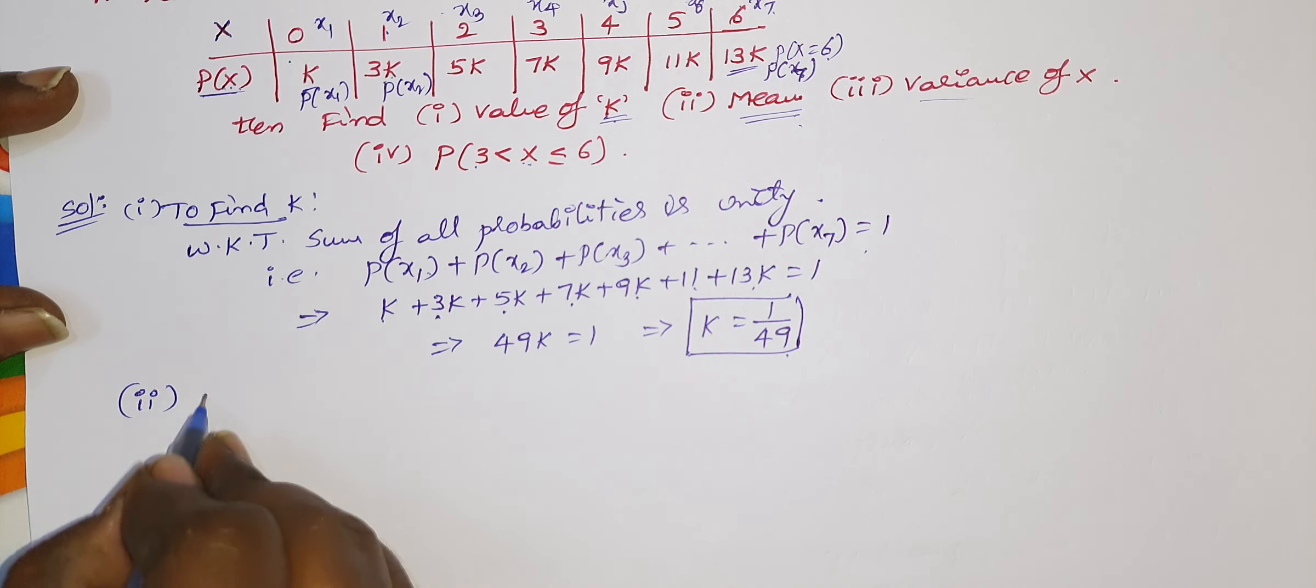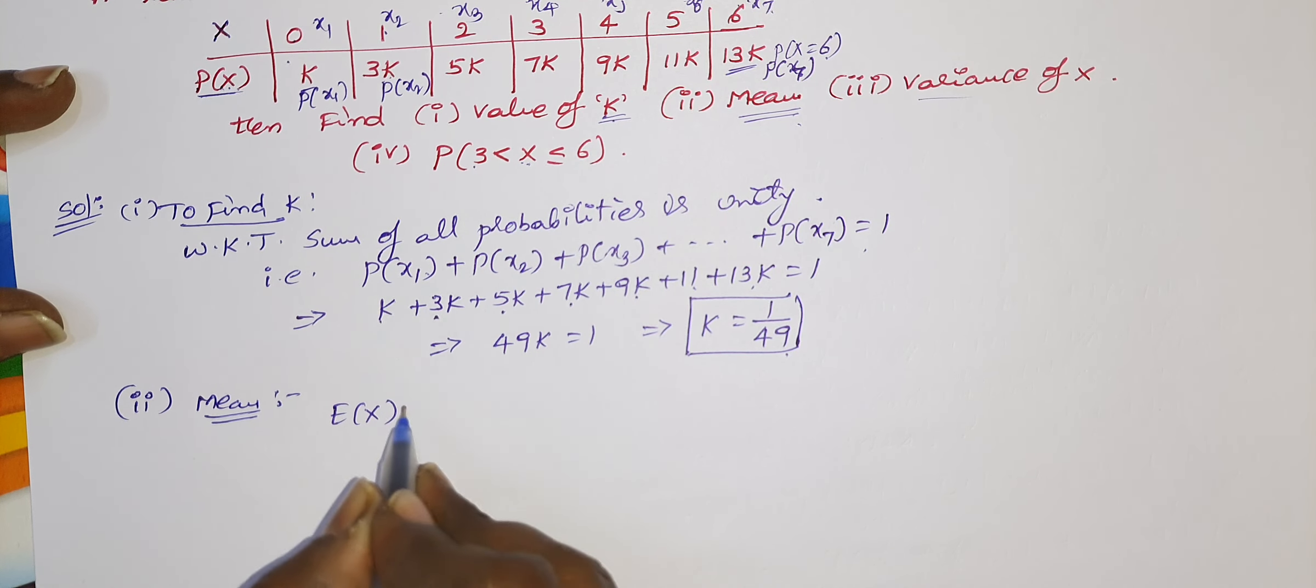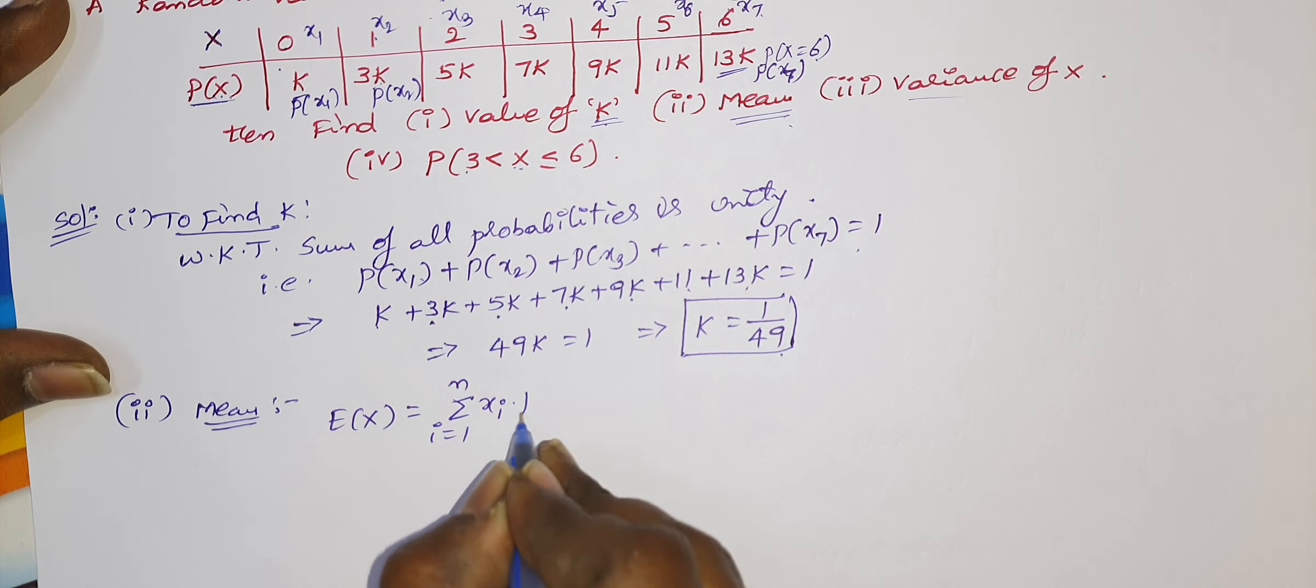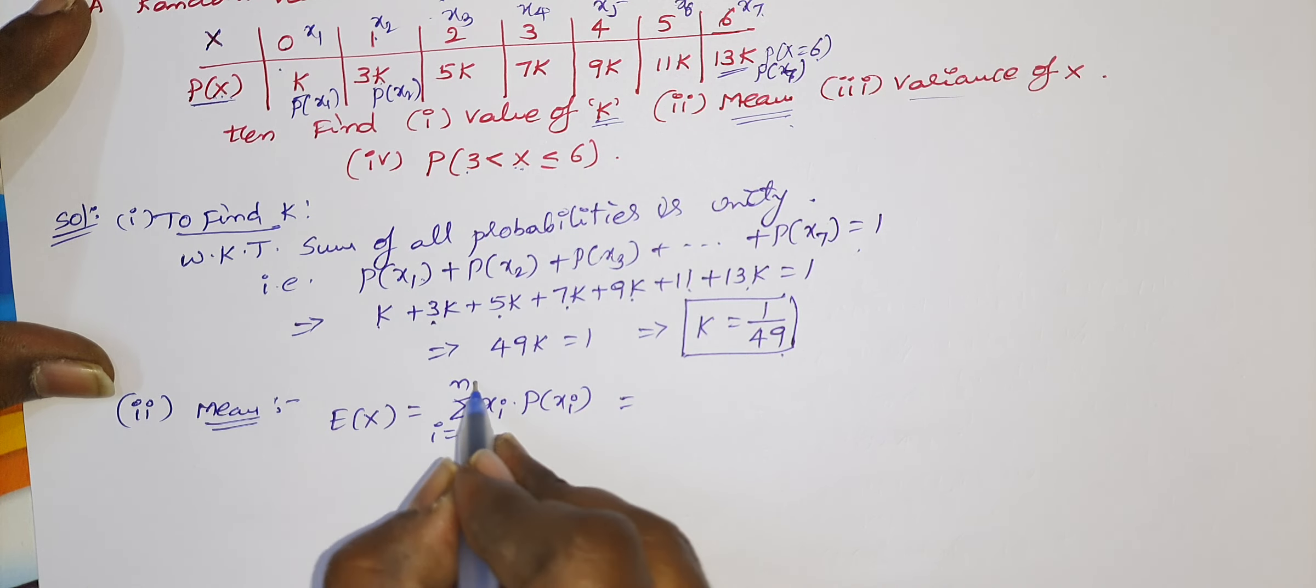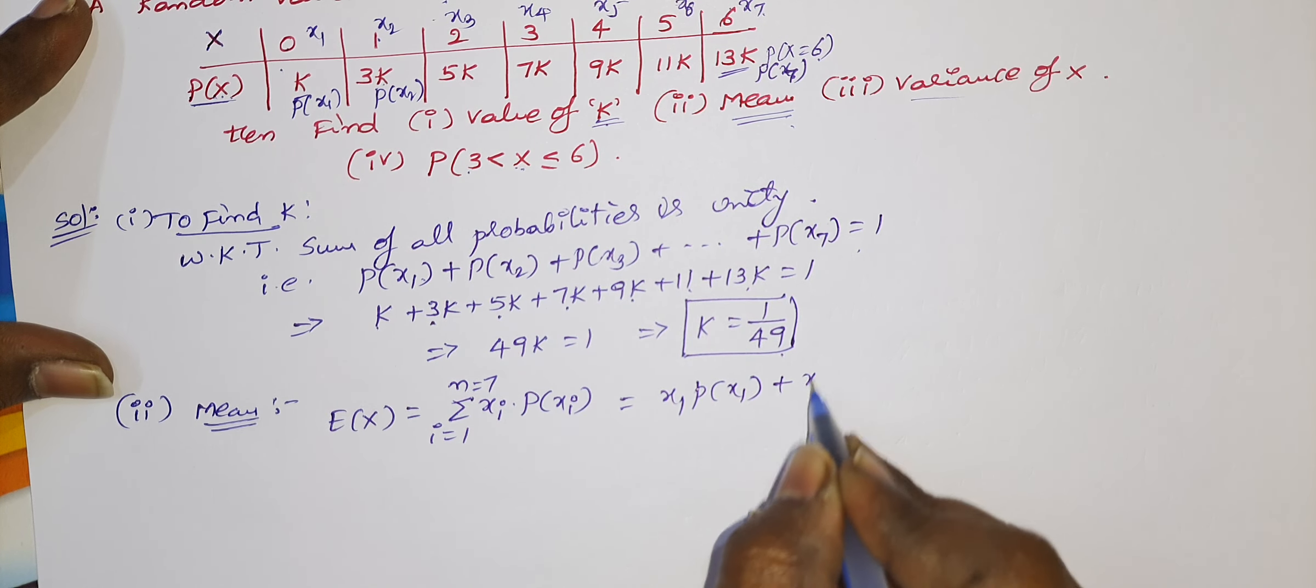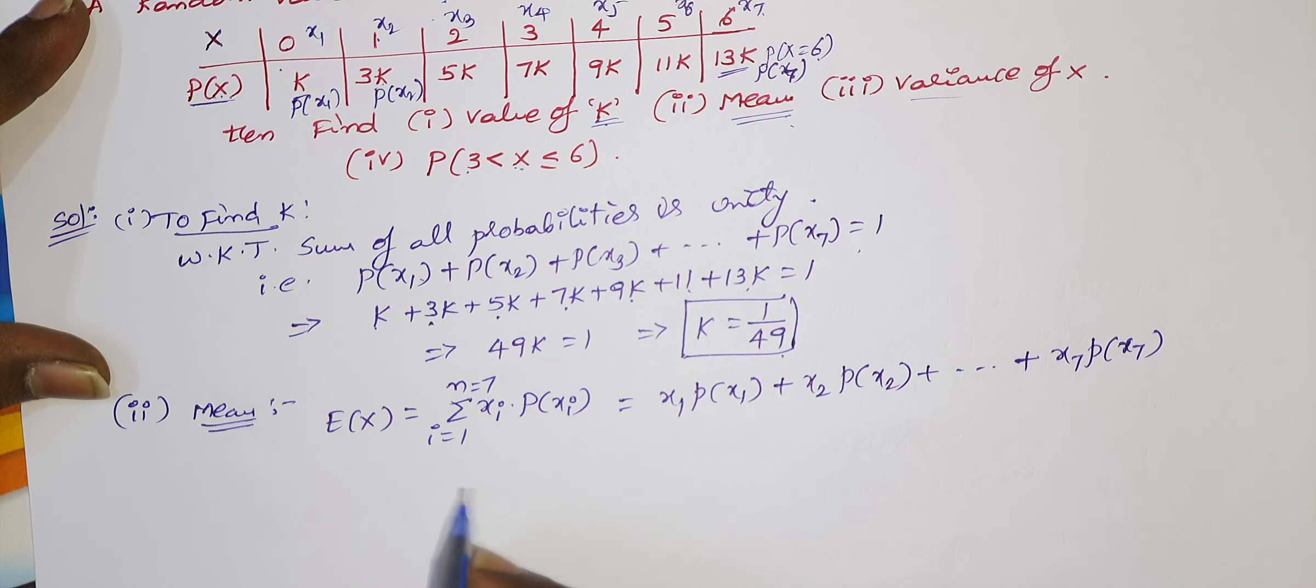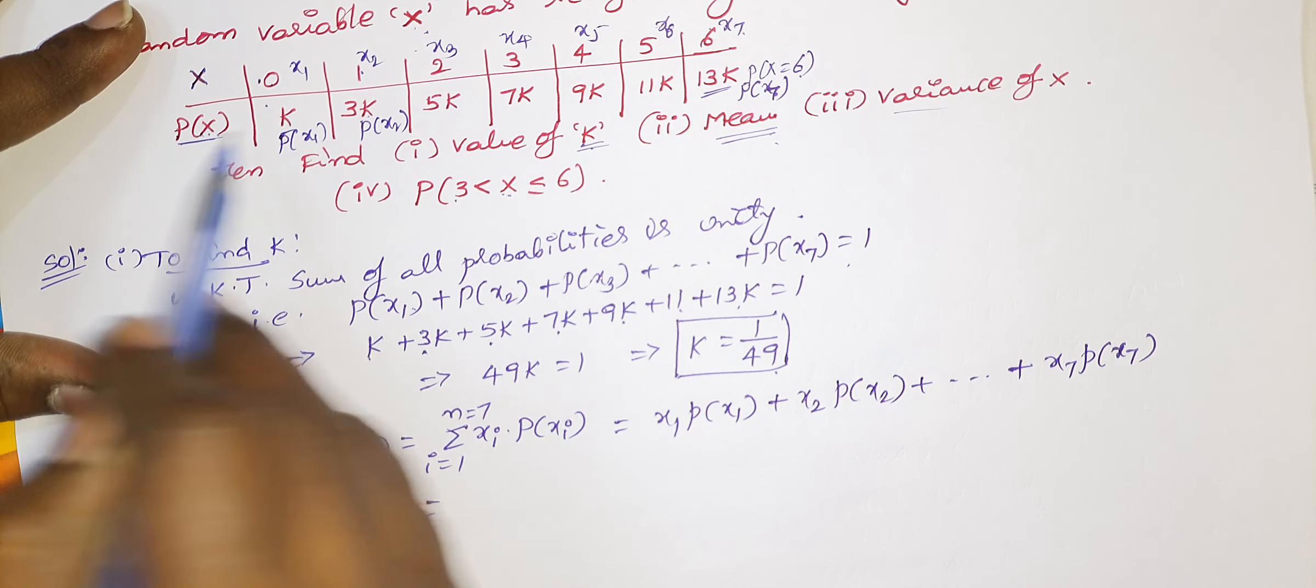Next, mean. Mean is also known as average, otherwise expectation of the random variable which is represented by u of x. u of x is nothing but summation i equals 1 to n, x_i into probability of respective x values. So you can expand this one. Here n is nothing but 7, last value. So you will get x1 into probability of x1, x2 plus probability of x2 and so on. It is not necessary to write all terms.